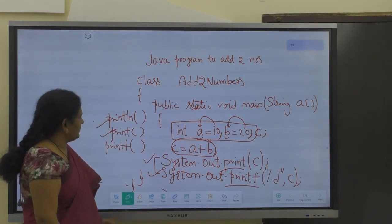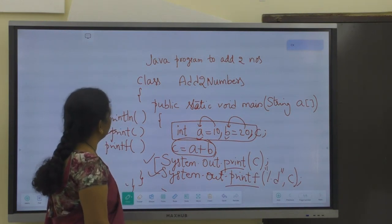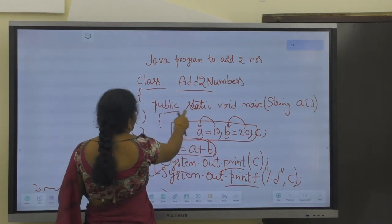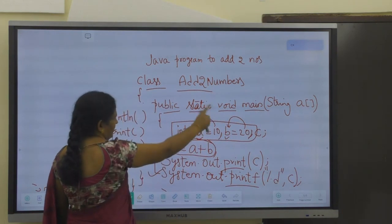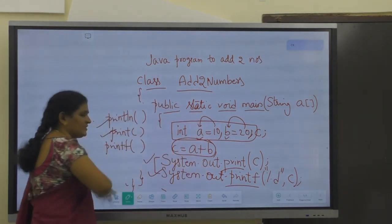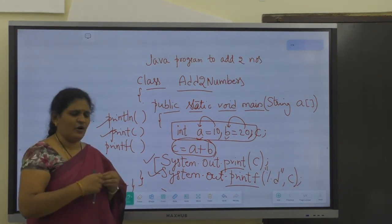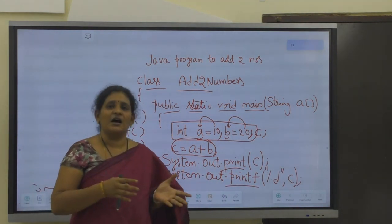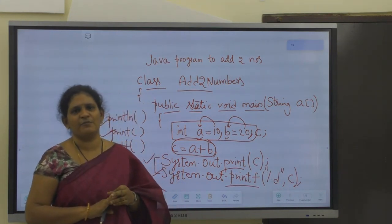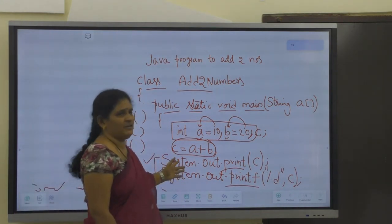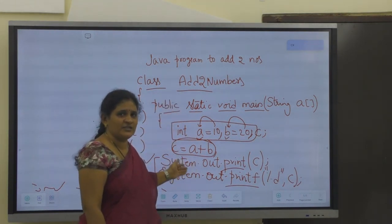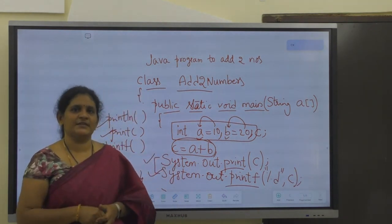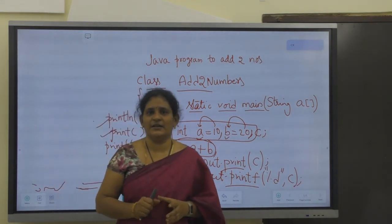This is the addition of two numbers using a Java program. The same concept applies: start with class, followed by class name, open the class, write public static void main, give one parameter, open the bracket, write the logic, close the method, close the class. This is the way all Java programs are written. Very basic programs like hello world and adding two numbers can have logic written directly in the main method. Writing logic in other methods will be discussed in the next lecture. For today's class, I will be signing off.